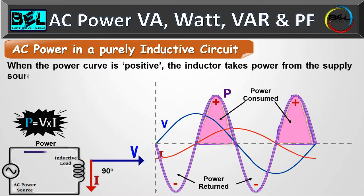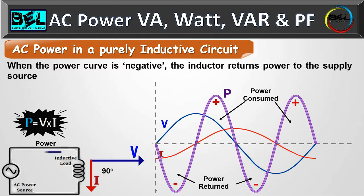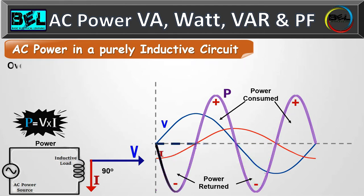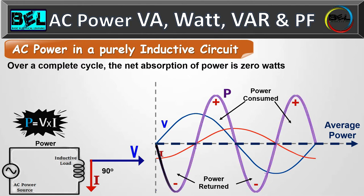When the power curve is positive, the inductor takes power from the supply source. When the power curve is negative, the inductor returns power to the supply source. In a pure inductive circuit, the same amount of power consumed is returned back to the source. Over a complete cycle, the net absorption of power is zero — for example, positive 15 watts and negative 15 watts average to zero. So the inductor has no work done and no energy consumed.